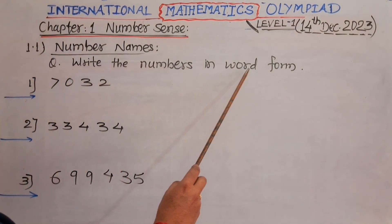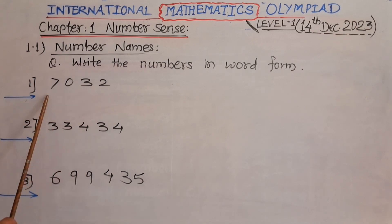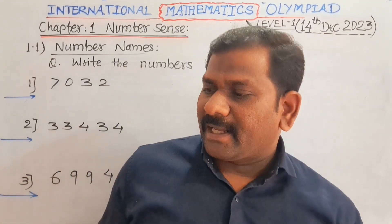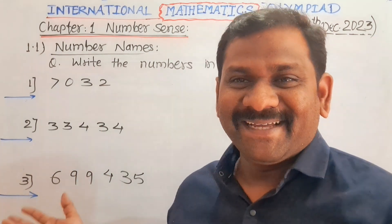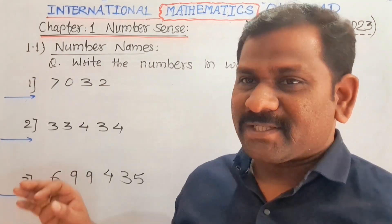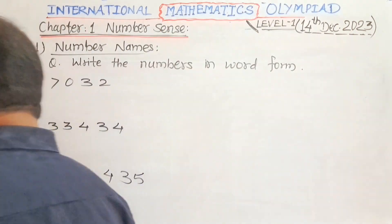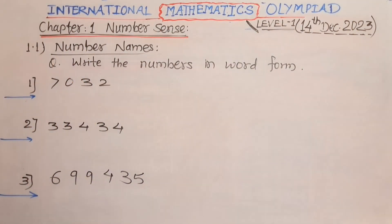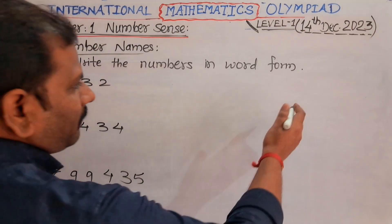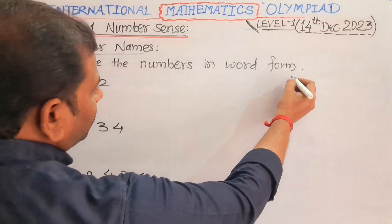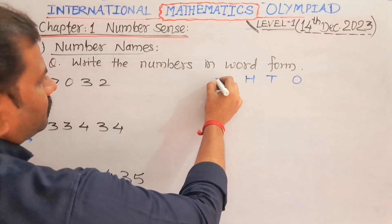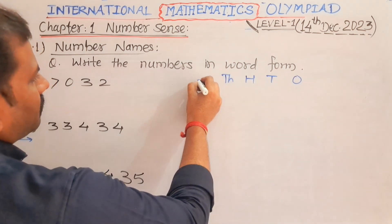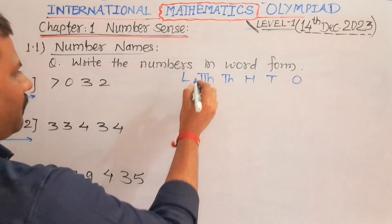Write the numbers in word form. There are three numbers given and you have to write them in word form. First of all, we have to read the numbers. I will give you a simple trick: always arrange the numbers according to their proper positions. We should know that the positions are ones, then tens, then hundreds, thousands place, ten-thousand place, and lakh place.